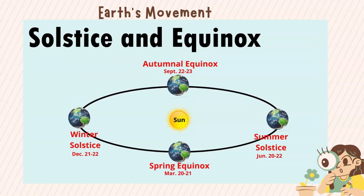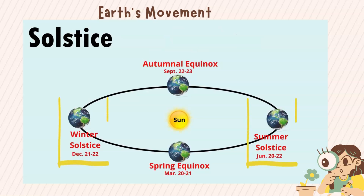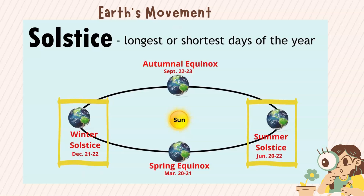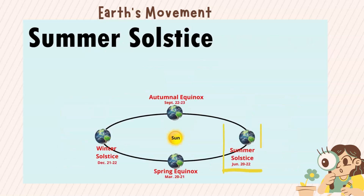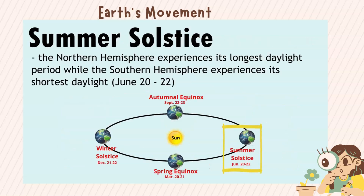Solstice and equinox. Solstice refers to the longest or shortest days of the year. Summer solstice: the Northern Hemisphere experiences its longest daylight period while the Southern Hemisphere experiences its shortest daylight. It can happen on June 21 to 22.